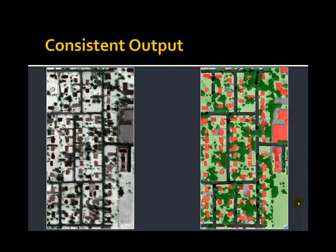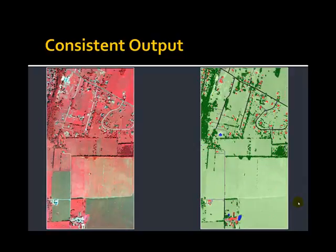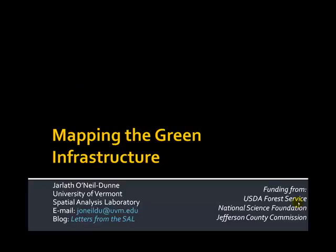The end result of all this work is consistent output — whether we zoom into dense residential areas or zoom out to look at the very heterogeneous landscape with sparse residential areas mixed with forest polygons and a rural agricultural landscape. We have a very stable land cover classification generated in an automatic framework for the entire 550 square kilometers. That concludes this presentation. I'd like to thank the USDA Forest Service and National Science Foundation, both of whom funded some of the initial work developing these techniques, and the Jefferson County Commission who we partnered with on this project.